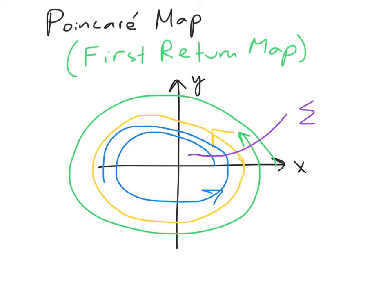And the map I'm going to create, the Poincaré map, is going to be a map from sigma to itself. And what this map is going to tell us is, if we start at some point on this map and we run forward in time, where will we next intersect this map?